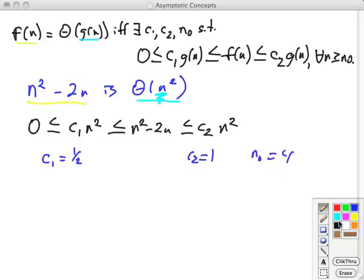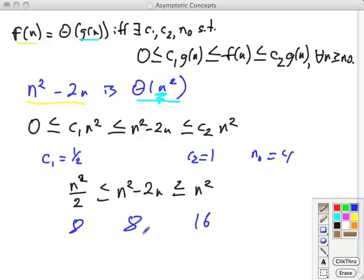So if we plug those in, I'll leave out the 0 this time. n²/2 ≤ n² - 2n ≤ 1·n² for n ≥ n0, which is 4. So you can see that this will be true because 4²/2, that's going to be 8. Yeah, 16 - 8 will be 8. And 4² will be 16 at that point. And of course, then I have to show that that continues to be true as n grows.